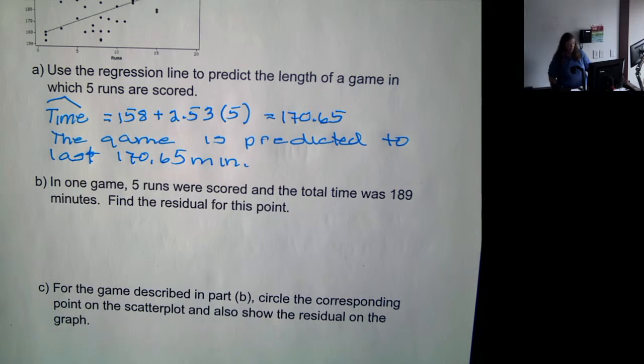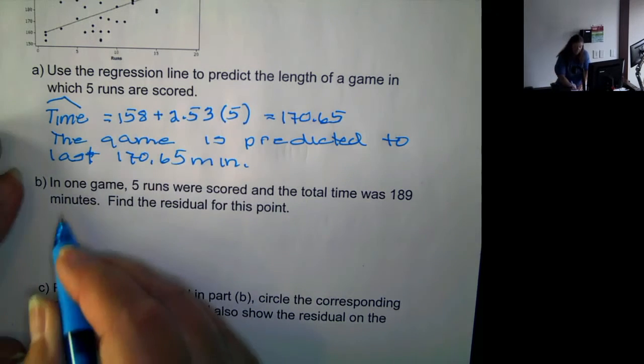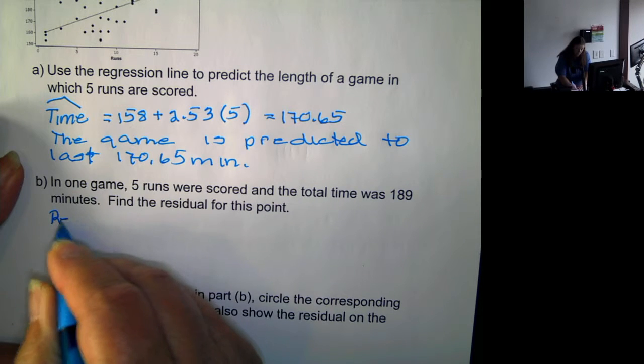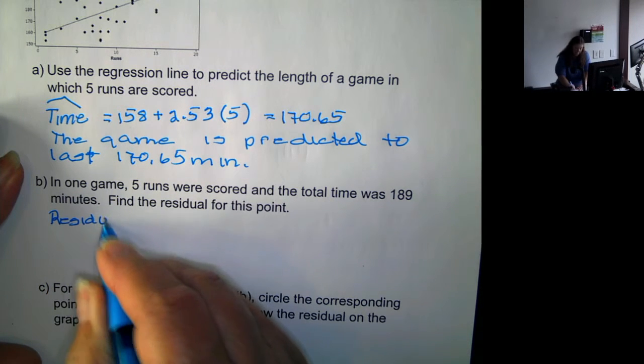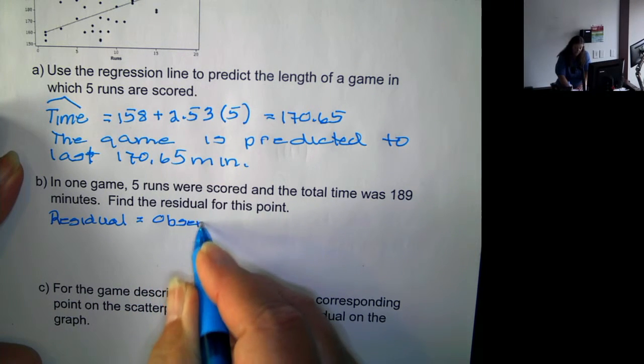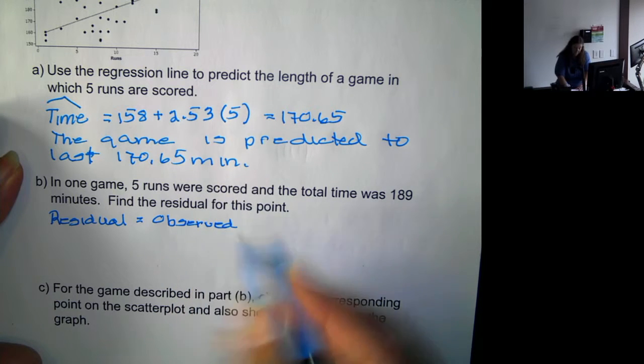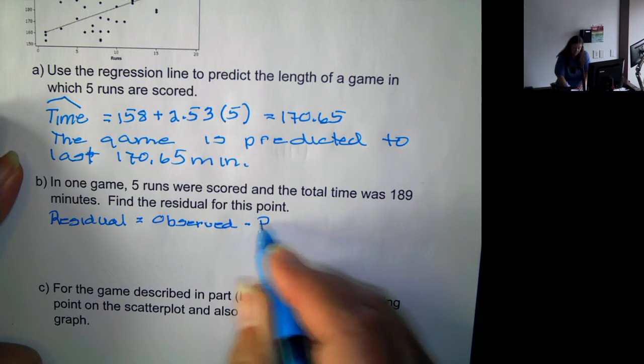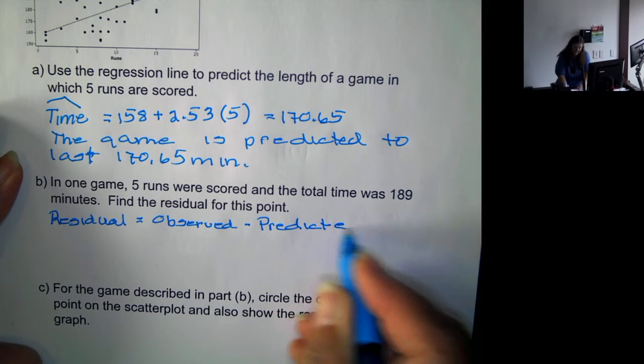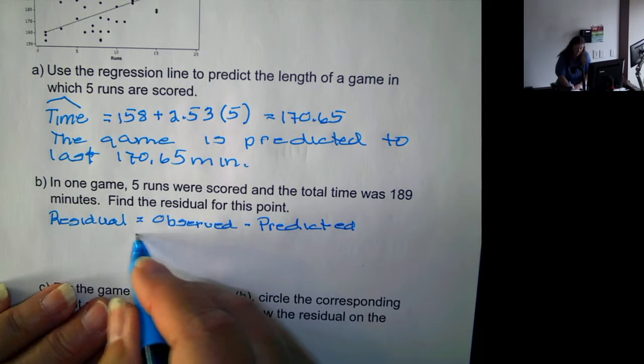So now we have in one game five runs were scored and the total time was 189 minutes. We want to find the residual for this point. So the residual minus the predicted.